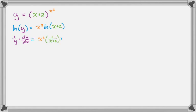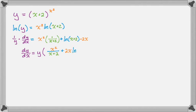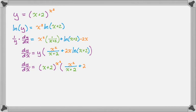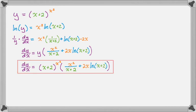Using the product rule: it's first times derivative of the second, plus second times derivative of the first. Now I need to multiply through by y and clean things up. Then I replace y with the original expression, and I have the answer: dy/dx equals the quantity x plus 2 to the x squared times that simplified expression. That's the first method.